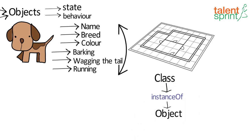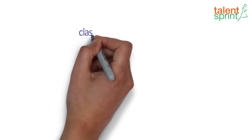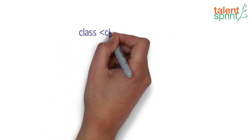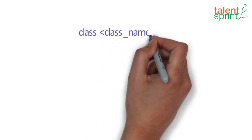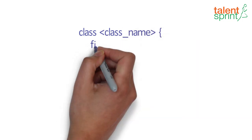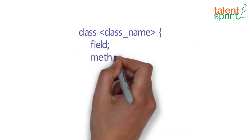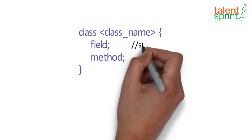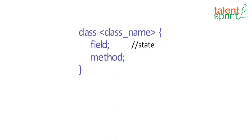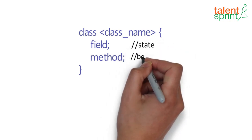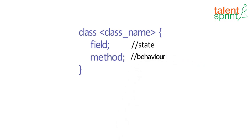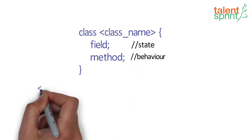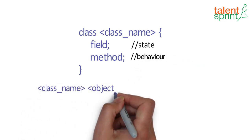A class can have multiple objects. The syntax for defining a class is fairly simple: the class keyword followed by the class name, and within the curly braces we list down all the fields (that is, state) and the methods (that is, behavior). Now if you have to create an object of this class, we use the new keyword, and the syntax is as shown.